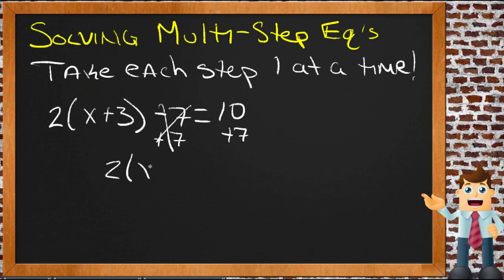Now over here on the left, we're just going to have 2(x + 3), and that's going to equal 17 (10 + 7). Now our next step is either parentheses or multiplication, but since we're doing order of operations backwards, we'll do the multiplication.